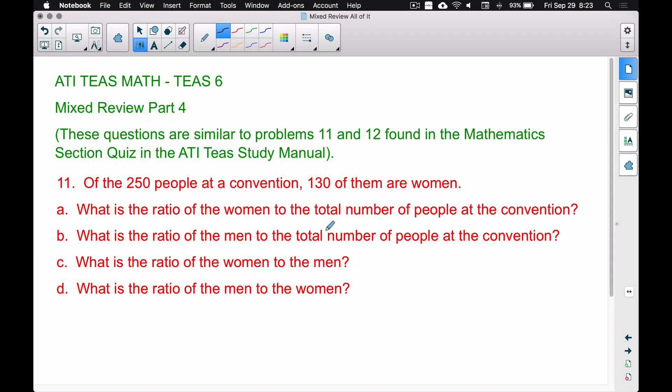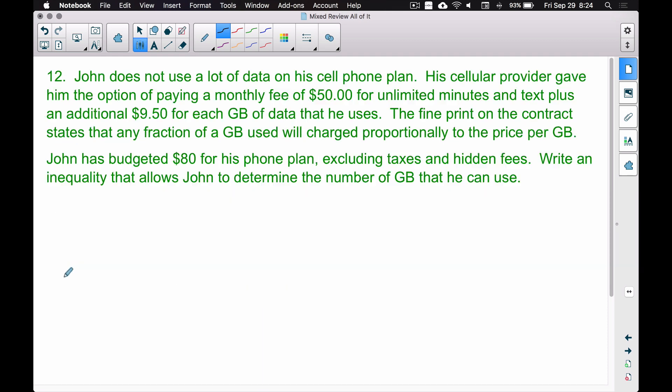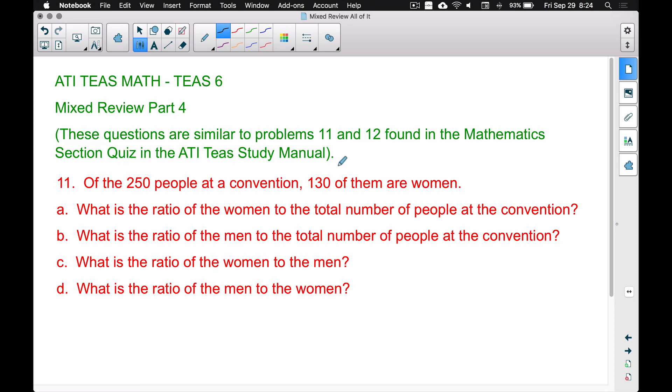In this video, this is going to be mixed review part 4 for the ATI TEAS Math T6 test. The two questions we'll work on here, 11 and 12, will be somewhat similar to the mathematics section quiz in the ATI study manual. There's technically more than two questions here because 11 has parts a, b, c, d, and number 12 is just one question, but we're still hitting on various things.